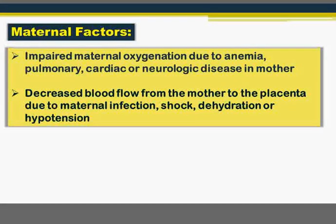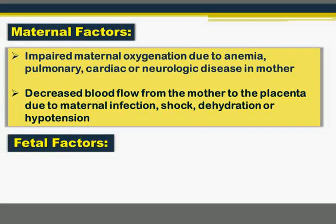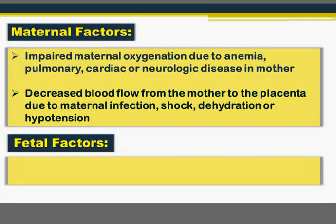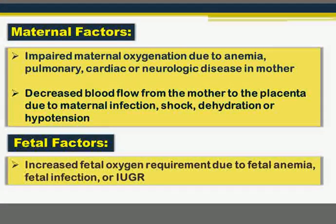Decreased blood flow from mother to placenta can occur due to maternal infection, shock, dehydration, or hypotension — an acute illness where the mother's general health and oxygen supply are normally fine, but acute critical illness decreases blood flow to the placenta. Regarding fetal factors: increased fetal oxygen requirement due to fetal anemia, fetal infection, or severe intrauterine growth retardation from congenital infection or chromosomal abnormalities. Here blood and oxygen supply from mother and placenta are normal, but the baby's requirements exceed normal due to fetal problems.